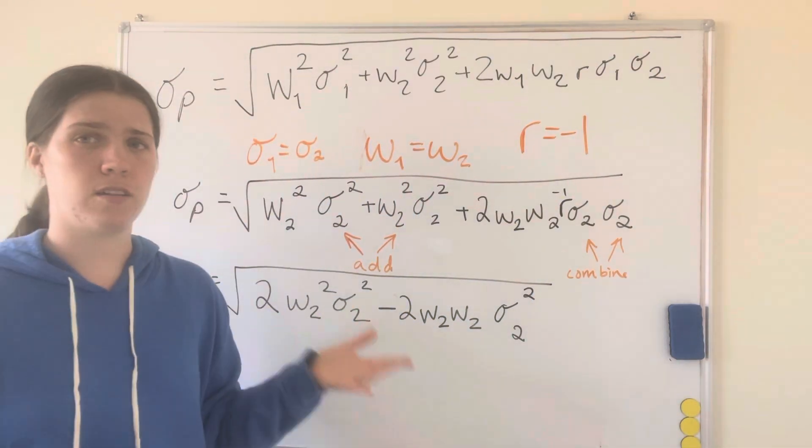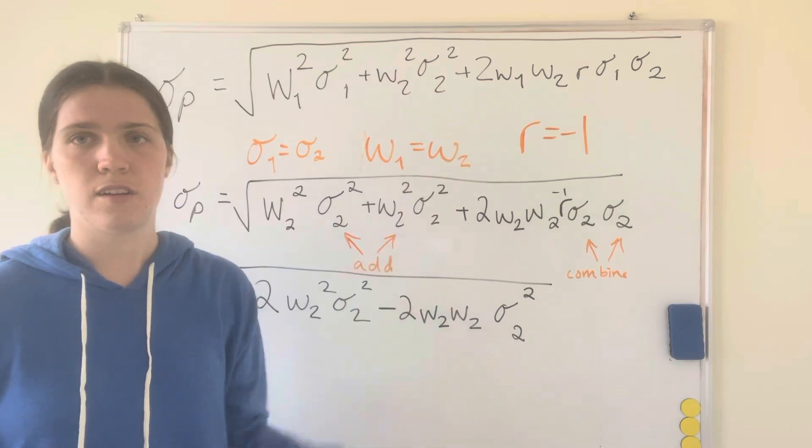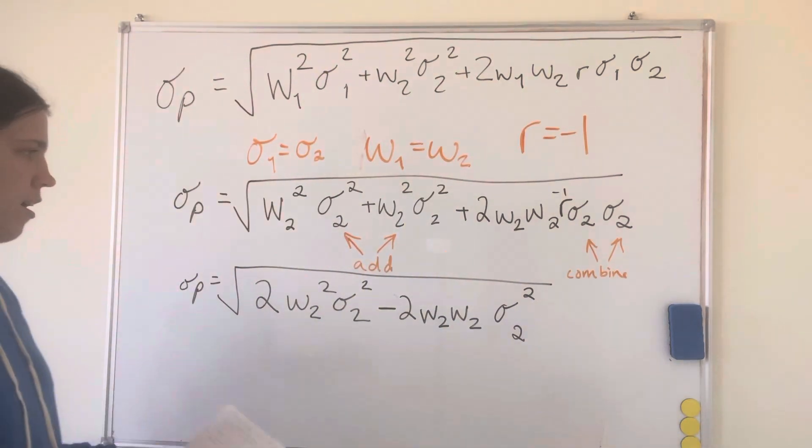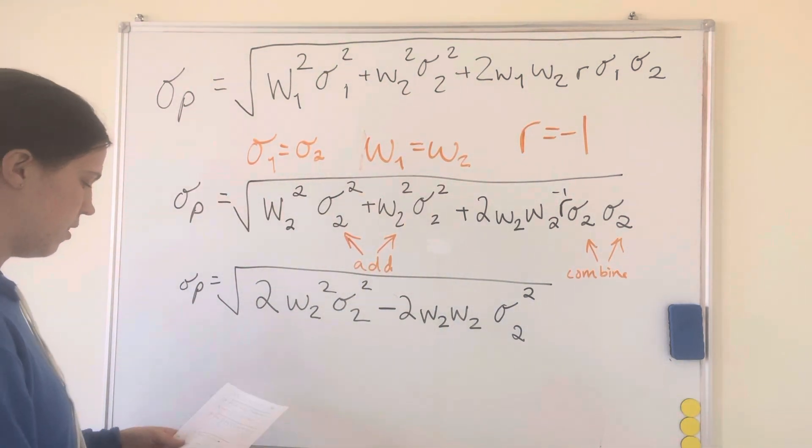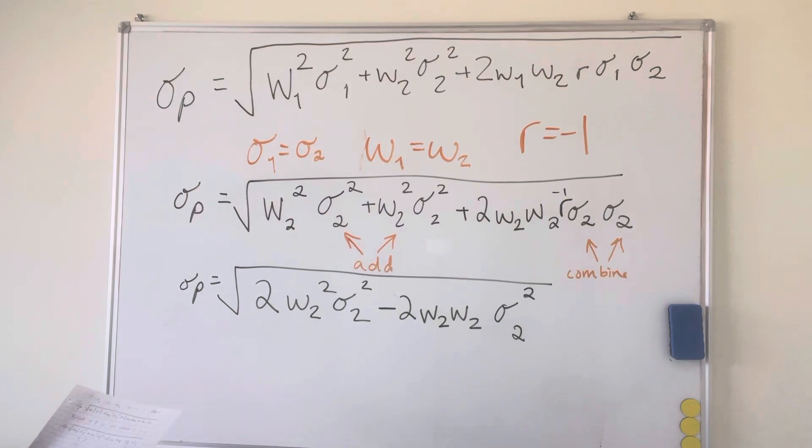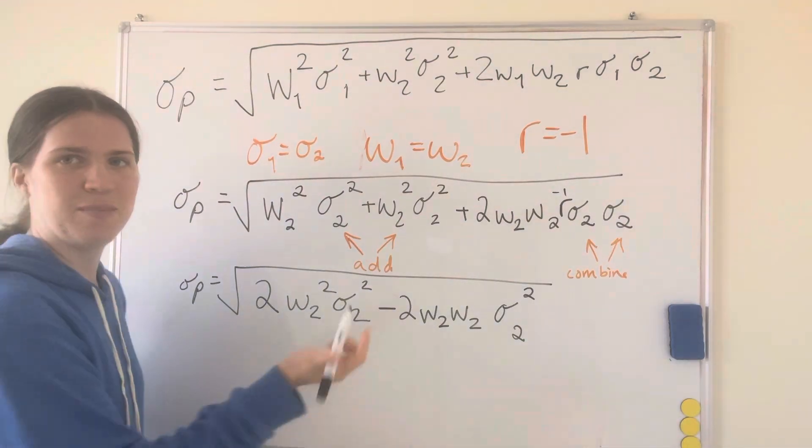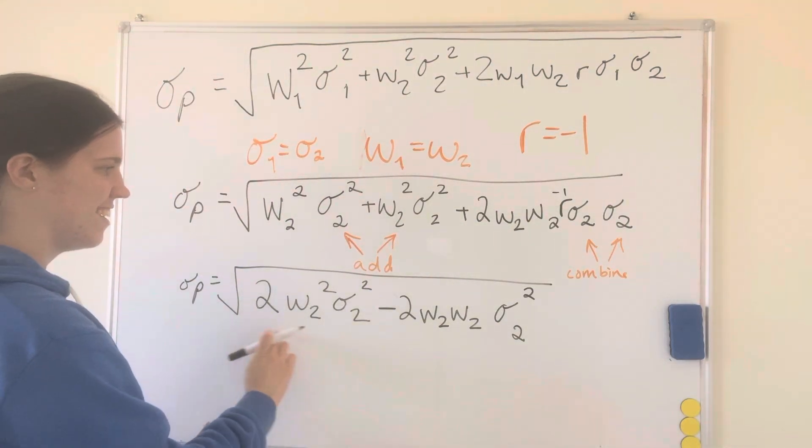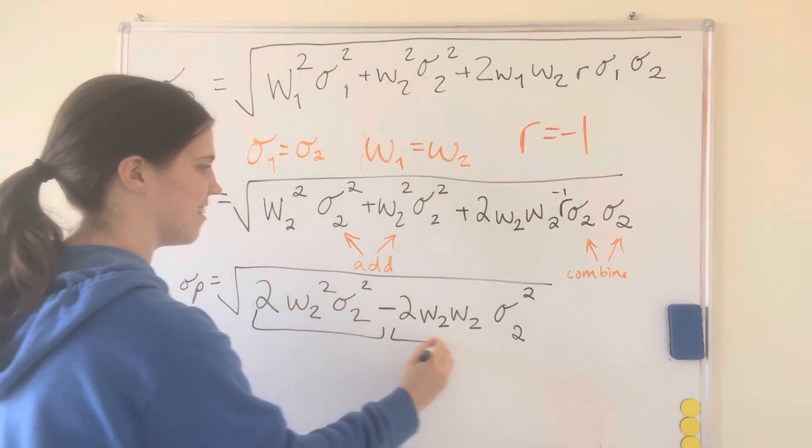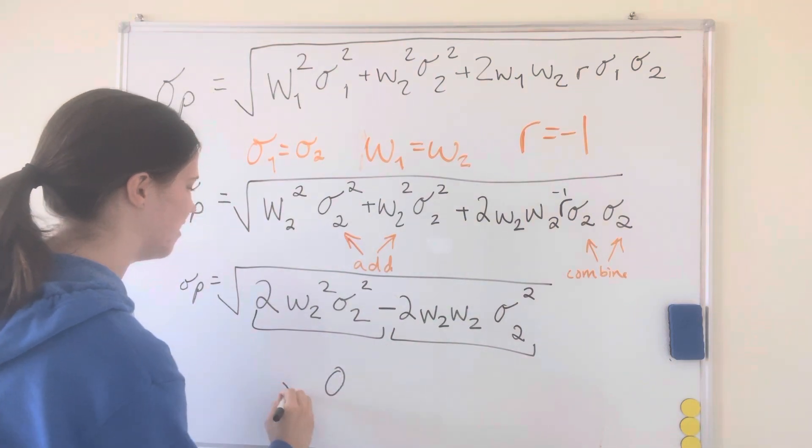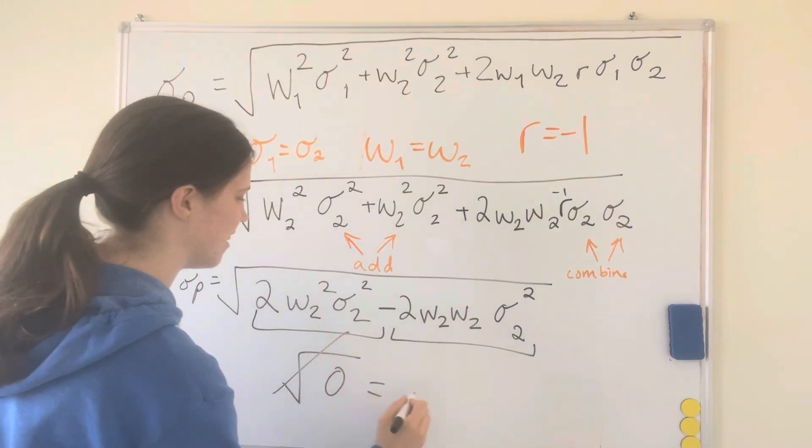Sometimes there's r, sometimes there isn't. If there's not you can just ignore it, but if there is just plug it in. All right. Now from here all we're going to have to do is subtract these. Since these are exactly the same we're going to get zero.